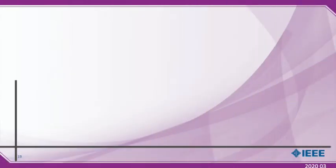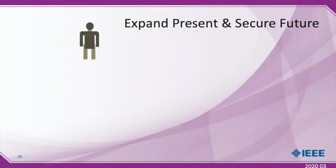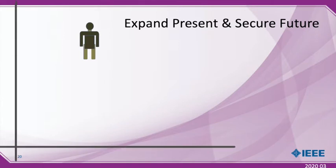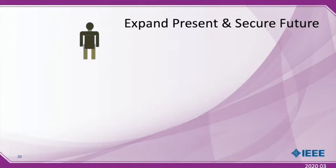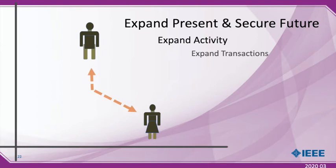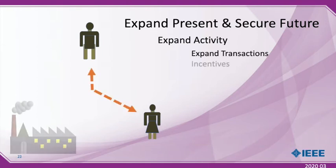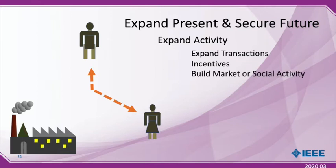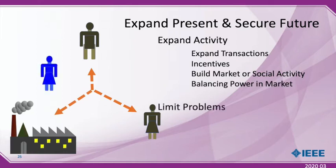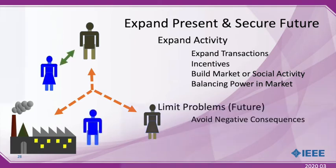We want to think about public policy as doing something to expand present activity and secure our future. We want to expand our transactions, have incentives for new kinds of transactions, and build new markets or social activities. Often this requires us to think about balancing powers within markets. Looking to the future, we want to avoid negative consequences of transactions.